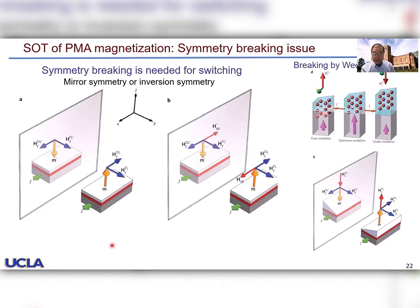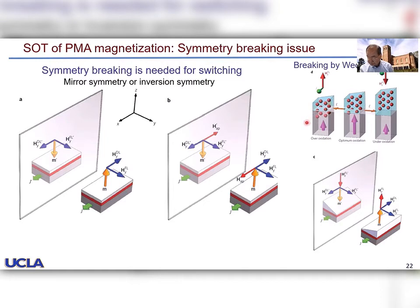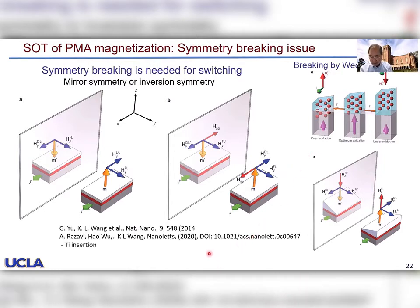As pointed out before, SOT switching of perpendicular magnetic anisotropy requires symmetry breaking — in particular, mirror symmetry or inversion symmetry breaking. This is normally done by applying an in-plane magnetic field. Earlier, we showed that by wedging the wafer — a very thin wedged region — you produce an effective field in the perpendicular direction, giving rise to symmetry breaking. However, wedging a wafer is not necessarily the most attractive option, as it is not convenient for manufacturing.